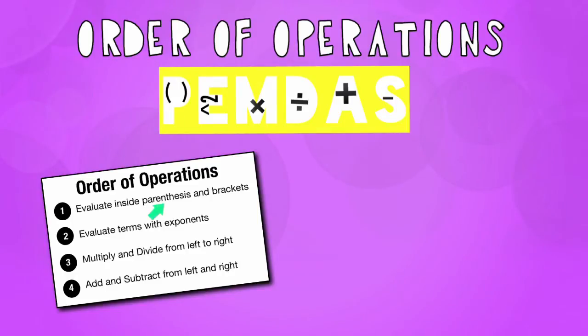P stands for parentheses and also brackets. When we are evaluating the expression, if there are parentheses or brackets, we do what is ever inside of them first, regardless of the operation.